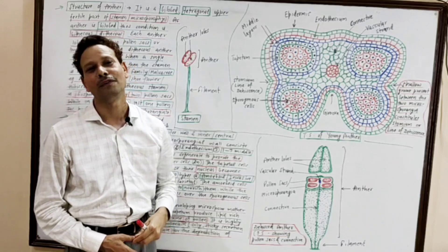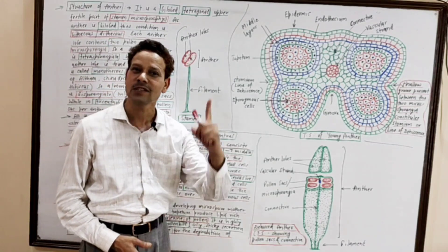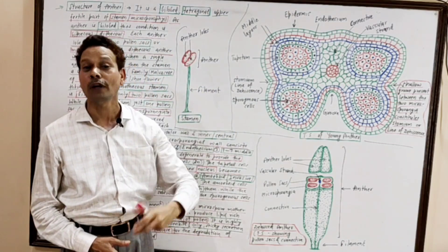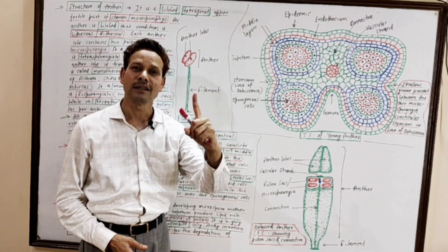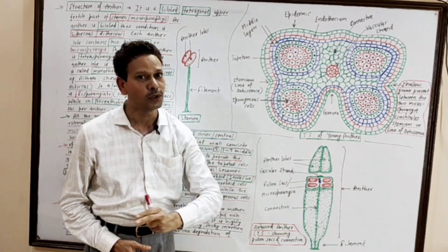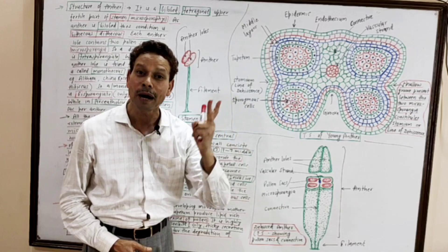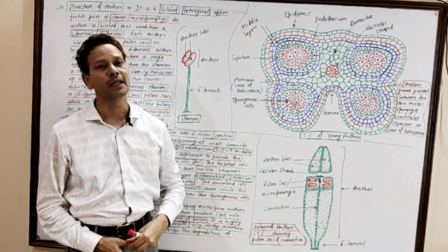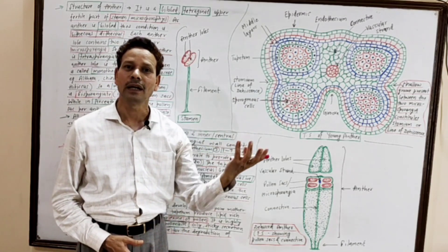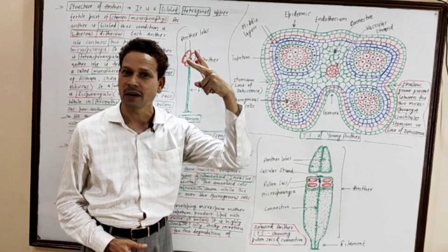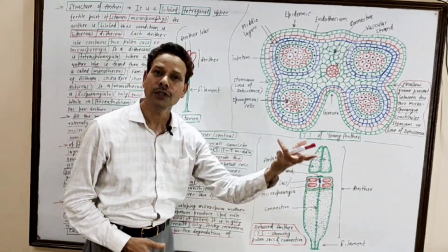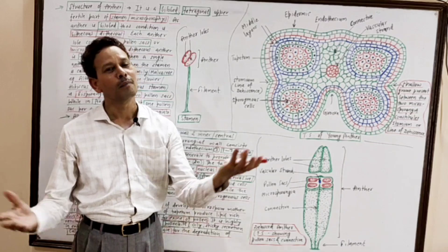While in the case of Arceuthobium, dear students, there is only one pollen chamber — only one microsporangium per anther. It is the monosporangiate condition in Arceuthobium. But in family Malvaceae, some examples like china rose, shoe flower, and hibiscus have only one anther lobe, and that anther lobe has two pollen chambers — it is bisporangiate.